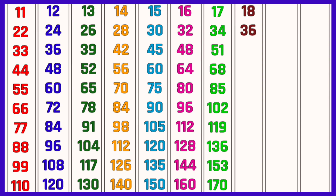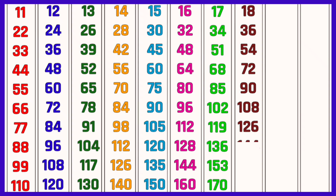Table of 18: 18 ones are 18, 18 twos are 36, 18 threes are 54, 18 fours are 72, 18 fives are 90, 18 sixes are 108, 18 sevens are 126, 18 eights are 144, 18 nines are 162, 18 tens are 180.